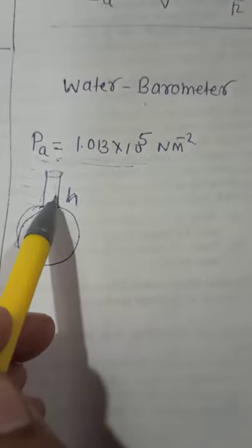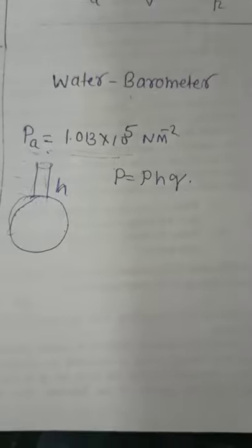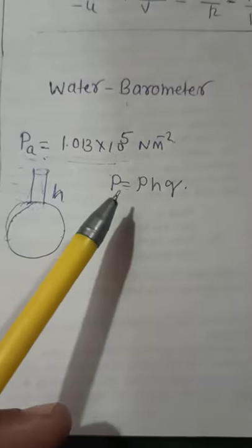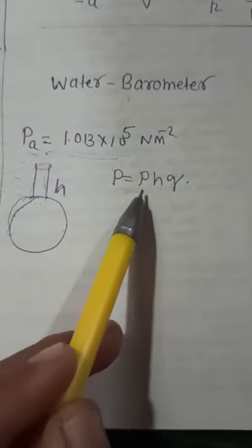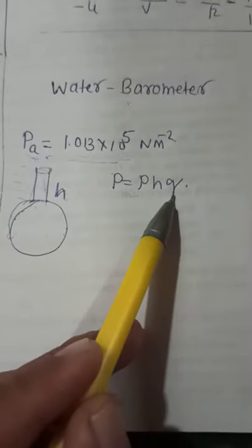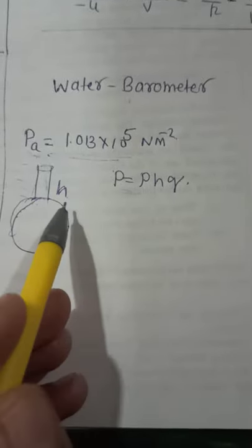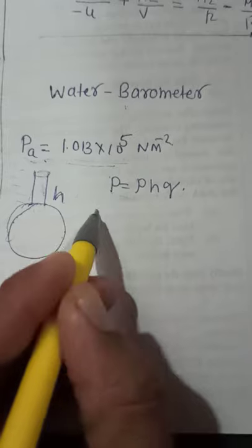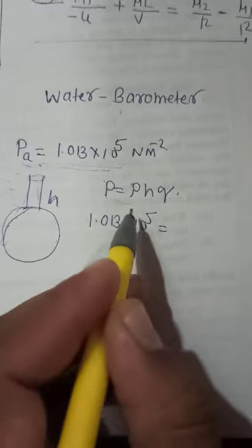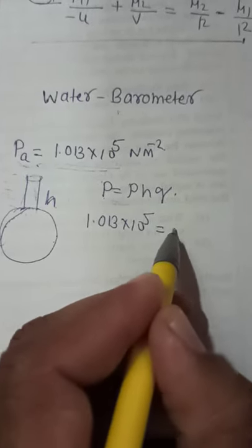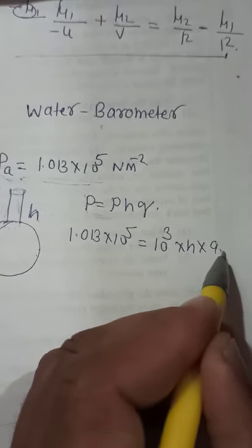If we fill the barometer, then we can use the height of the water column. So this is the formula of the pressure. P = ρgh, and rho is the density of water. H we have to find, g is 9.8, and pressure is already given. In place of P, 1.013 into 10 to the power 5. If we talk about rho, then we can see that rho is 10 to the power 3. H as it is, and 9.8.